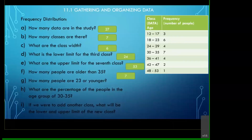How many people are 23 or younger? Including 23 — everybody — we can see that there are nine people in that group.